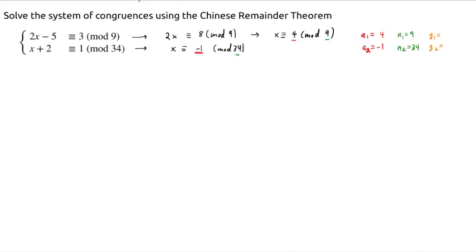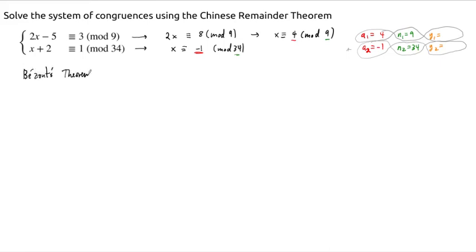Once we find these numbers, remember how the solution works. The Chinese remainder theorem says you multiply in a zigzag pattern the way I've lined this up, and then add those two results together. We need Bezout's theorem for that, which says we can find a linear combination: 1 equals something times 9 plus something times 34. Those numbers are going to be the inverses of these two things modulo the other one. We find these by performing the division algorithm and then reversing everything.